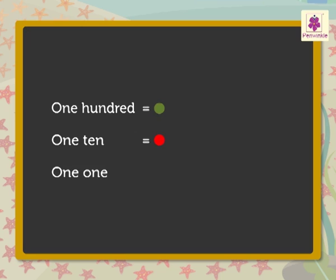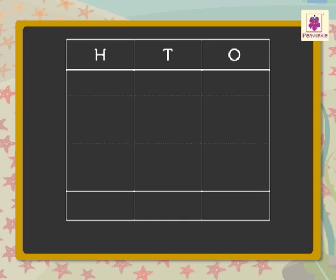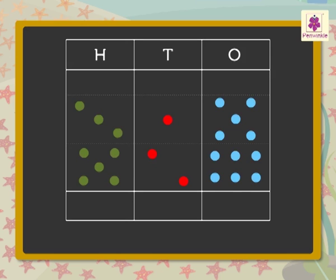Let us represent each hundred with a green dot, each ten with a red dot, and each one with a blue dot. So, the numbers 315 and 526 will be represented like this with dots.